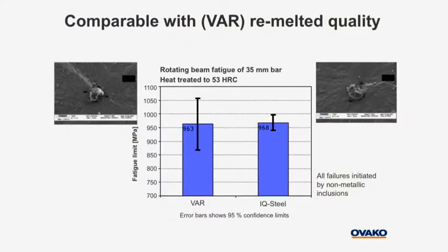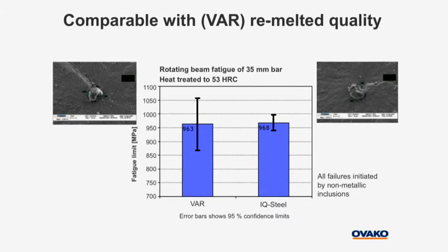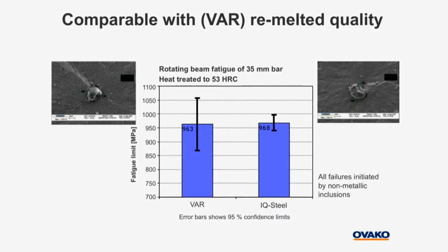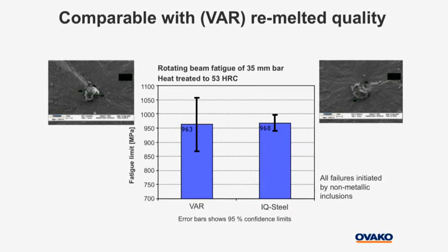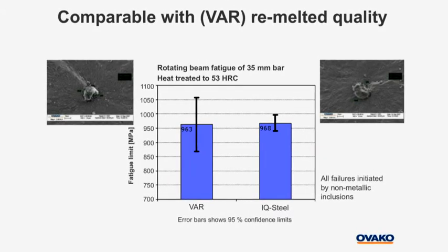This makes this material interesting as a substitute for material produced by remelting. Benchmarking with vacuum arc remelted steel shows that the fatigue properties obtained with IQ steel are equal to the fatigue properties of the much more costly remelted materials.